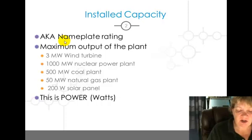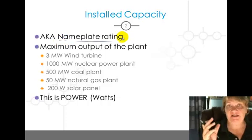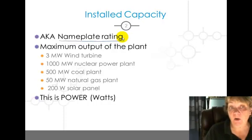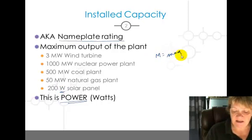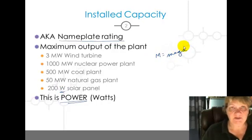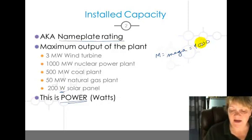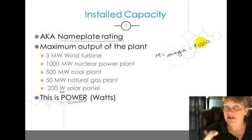It's also sometimes called the nameplate rating of the plant. So it's the maximum possible output of power. This is power because I'm talking in watts. The big W is a watt. The M equals a mega. So for most of this I'm talking about megawatts, and mega equals a thousand. So we're talking about a thousand watts or ten hundred watt light bulbs. So it's power, it's not energy yet, it's just power.